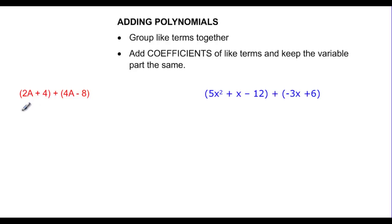So if I wanted to, I could rewrite this as 2a plus 4a, and then add my 4, which is a constant, and then subtract my 8, which is also a constant. And now you can see that we have a terms and constant terms. So I'm going to combine these. 2a plus 4a is going to give me a total of 6a, and 4 minus 8 will be minus 4. 6a minus 4 is the solution when we add.